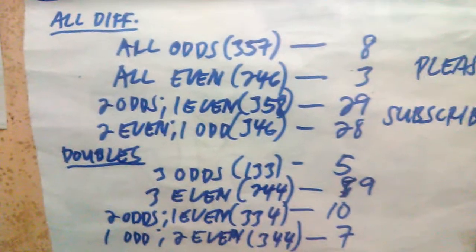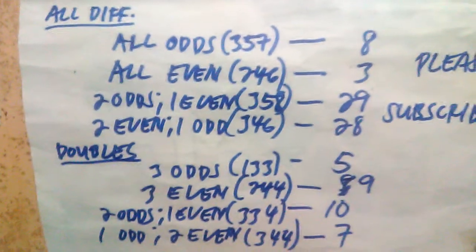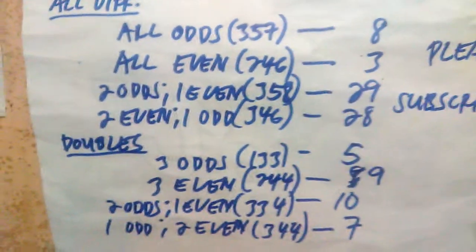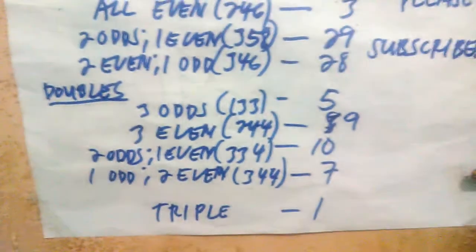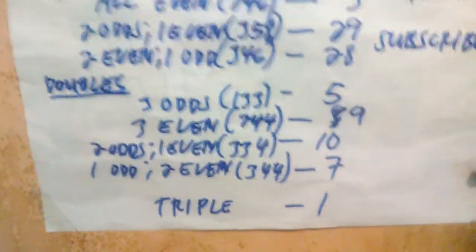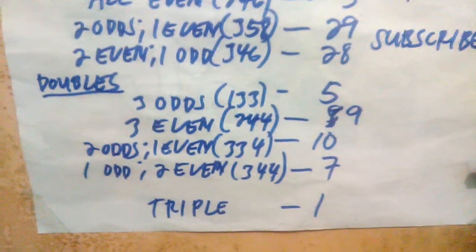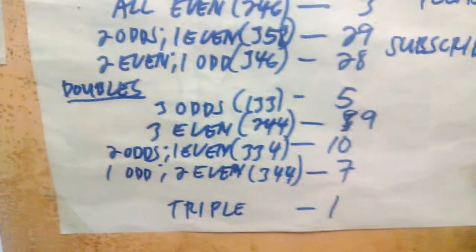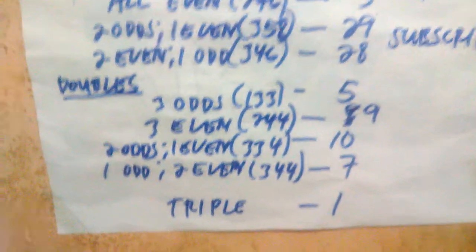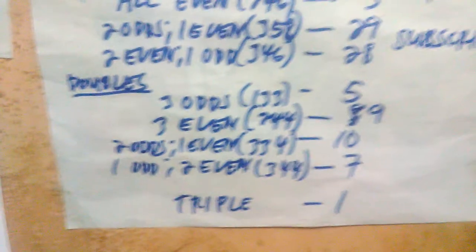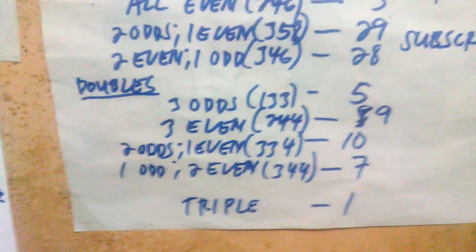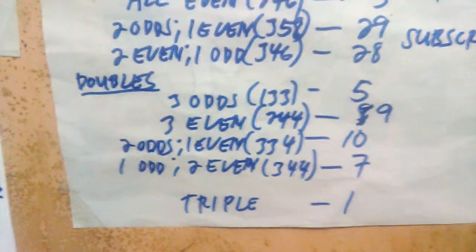There were about 28 for 2 even and 1 odd, meaning 2 numbers in the combination are even and 1 is odd. For doubles with 3 odds, for example 1, 3, 3, there were about 5. For 3 even or doubles like 2, 4, 4, there were about 9. For 2 odds and 1 even in doubles, for example 3, 3, 4, we have 10. For 1 odd and 2 even, for example 3, 4, 4, we have 7.